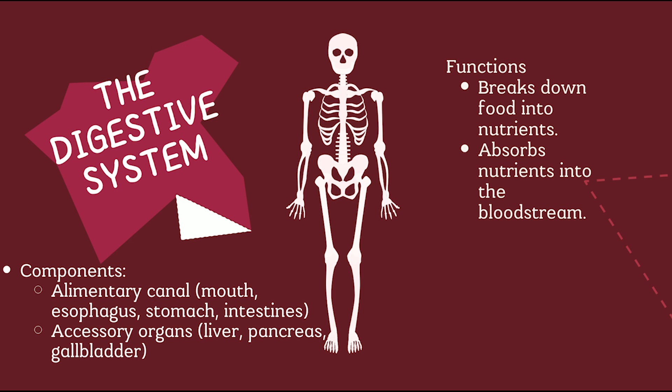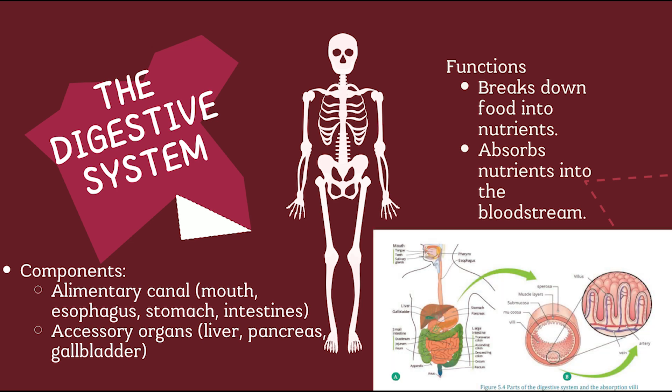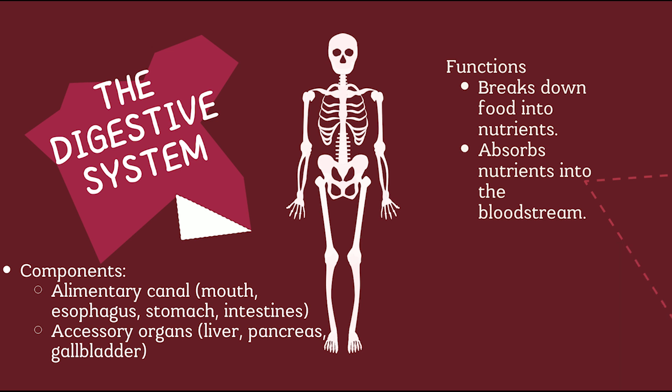The digestive system breaks down the food we eat into nutrients the body can absorb. It includes the alimentary canal — a long tube from the mouth to the anus — and accessory organs like the liver, pancreas, and gallbladder, which help with digestion. The goal is simple: break food into small molecules that can enter the bloodstream.